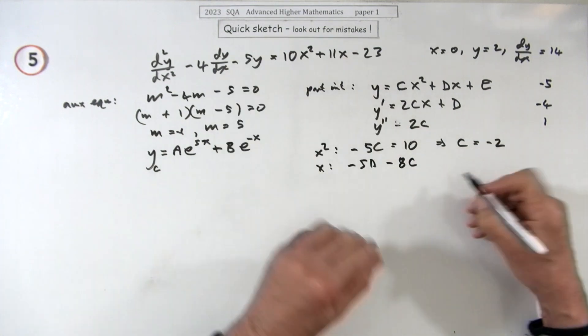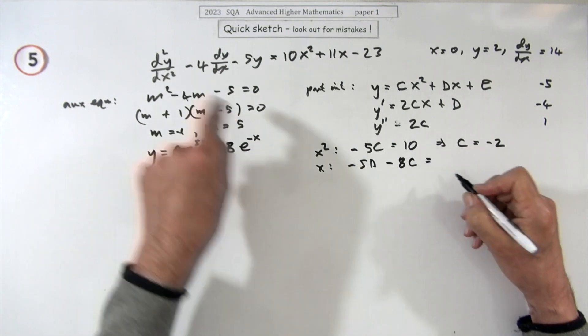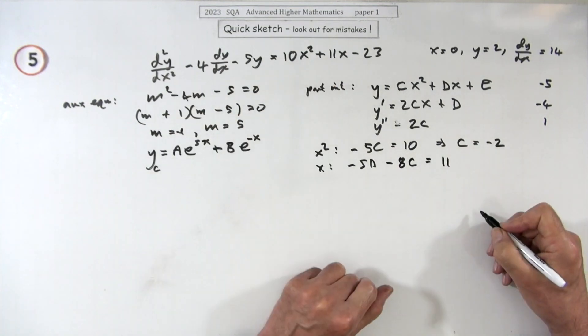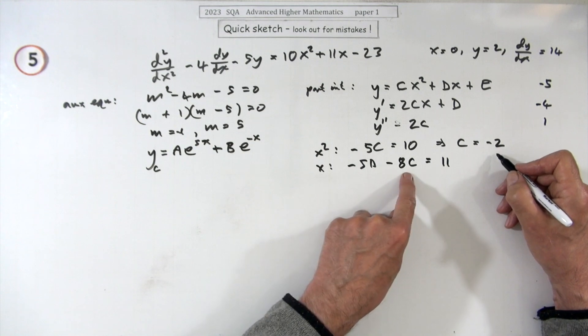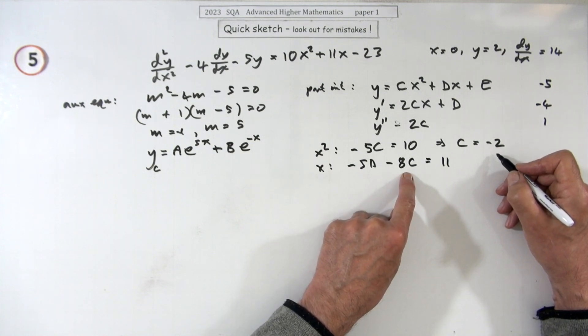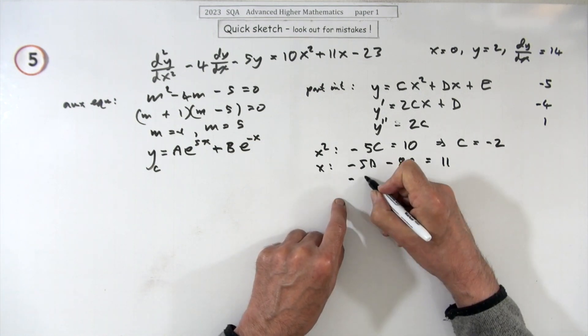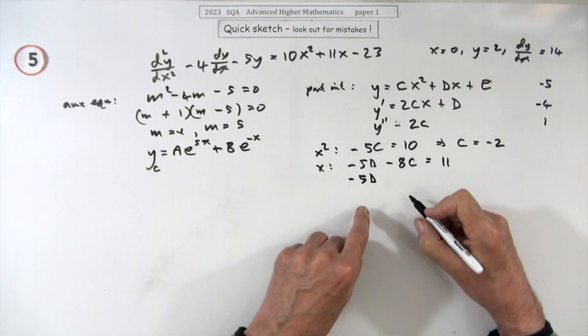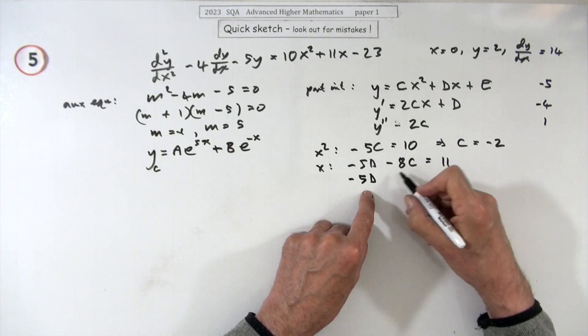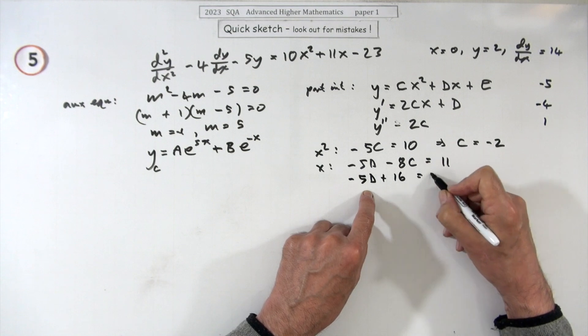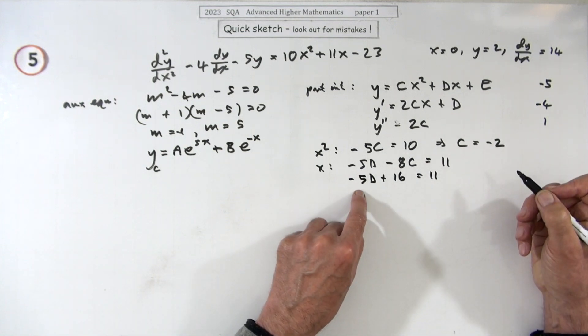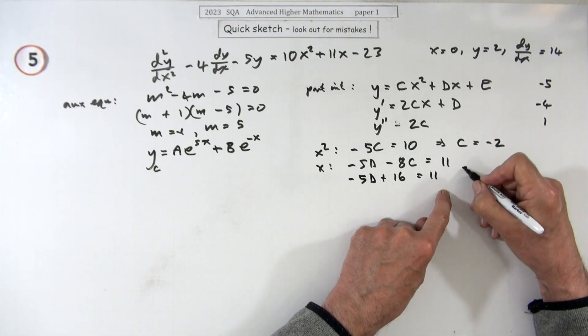Now I know what c is, that's a 16, so I've actually got minus 5d, I didn't want to come down here, minus 5d but that'll be plus 16 equals 11. So minus 5d will equal minus 5, which means that d is going to equal one.